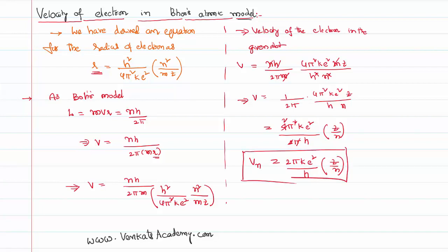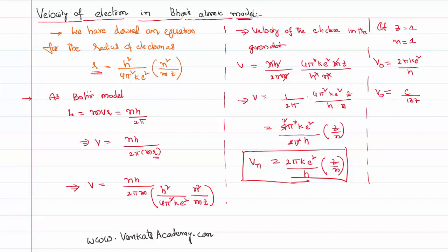Suppose for a hydrogen atom, z = 1, and for the first orbit n = 1 — which is called the ground state. Then v becomes v₀, the velocity of the electron in the ground state, equal to 2πke²/h. Substituting all the values gives the velocity of the electron as approximately the velocity of light divided by 137. The electron in its orbit is 137 times slower than the speed of light.